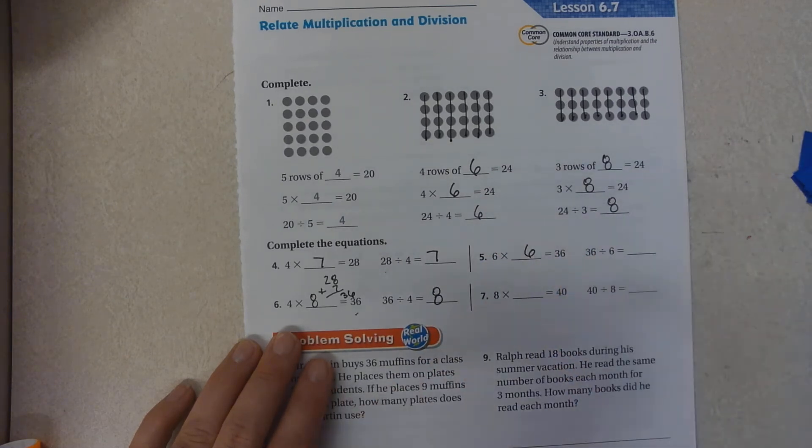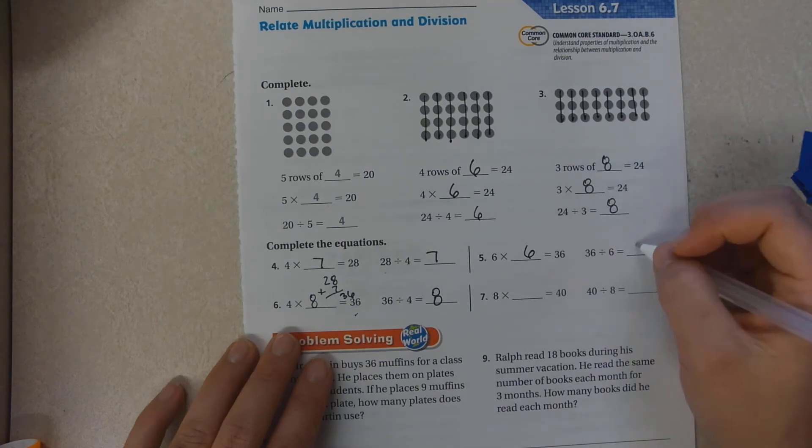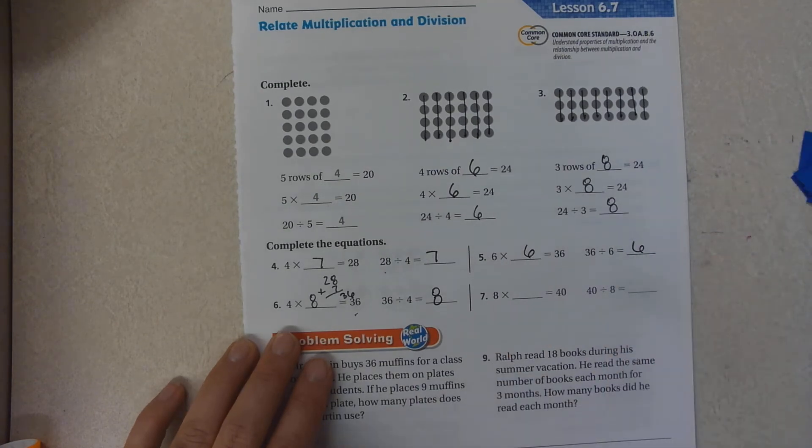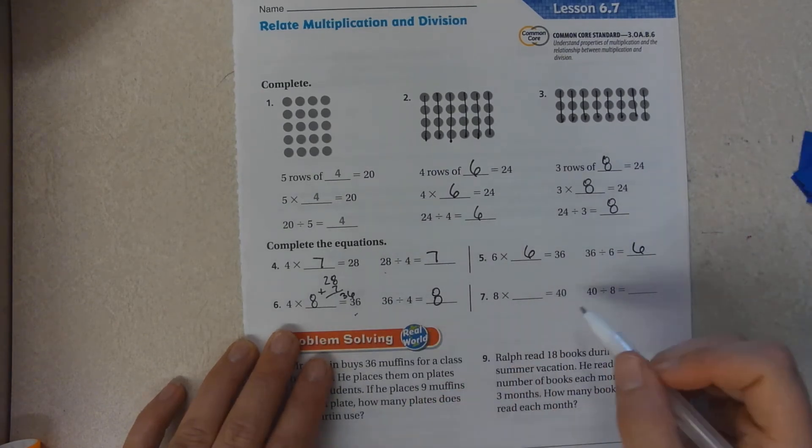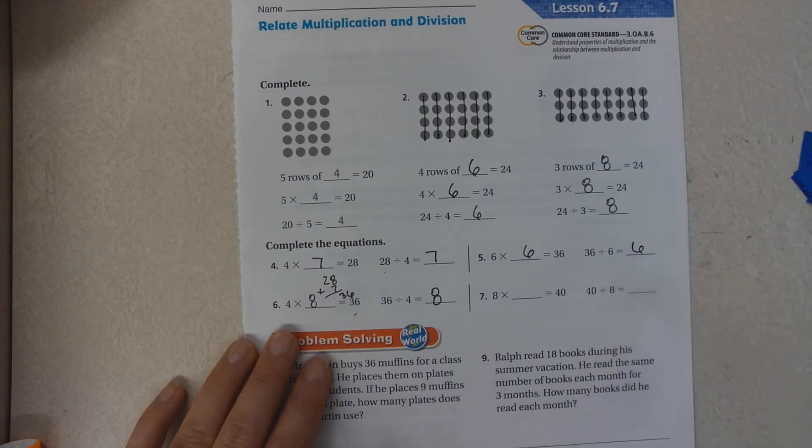6 times 6 equals 36. 36 divided by 6 is 6. 8 times what equals 40? That same number will be divisible.